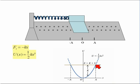At each point, the force fx on the glider is given by minus dU by dx. In other words, the negative of the gradient of the graph at that point.